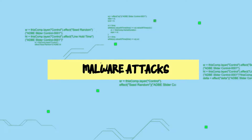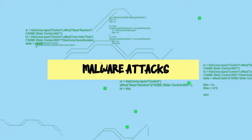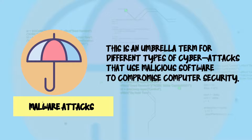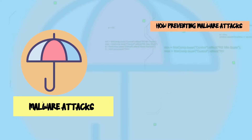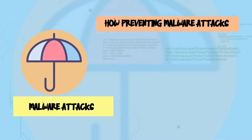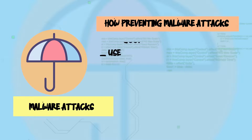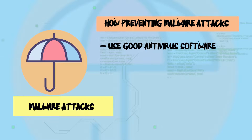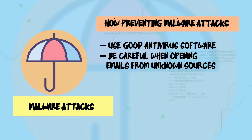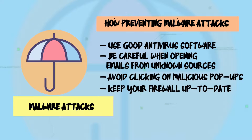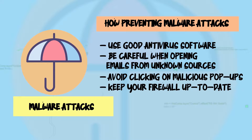Number seven is malware attacks. This is an umbrella term for different types of cyber attacks that use malicious software to compromise computer security. Steps to prevent malware attacks: use good antivirus software, be careful when opening emails from unknown sources, avoid clicking on malicious pop-ups, and keep your firewall up to date.